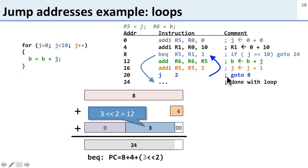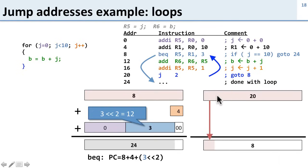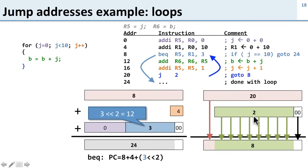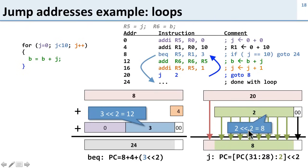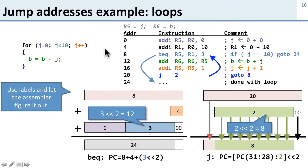This looks like a real hassle, but in practice when you write code you just use labels — you can call a target 'done loop' or 'repeat loop' and let the compiler or assembler figure out exactly what numbers to put in the immediate fields. However, it's important to understand the underlying mechanics so you know how MIPS uses all the bits in the instruction fields.